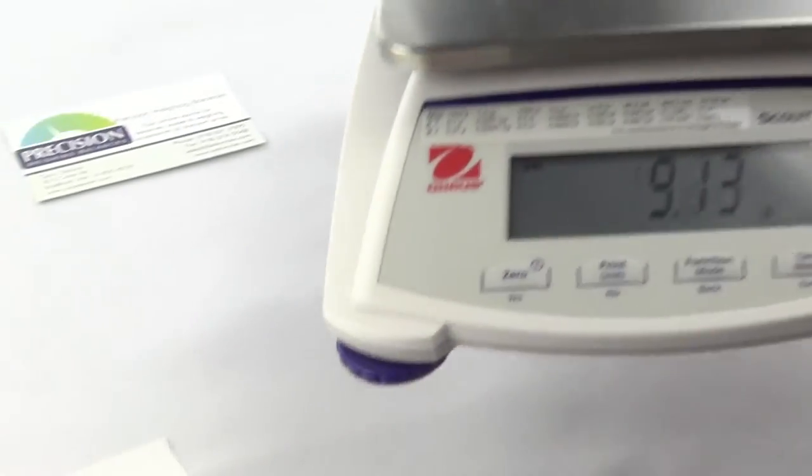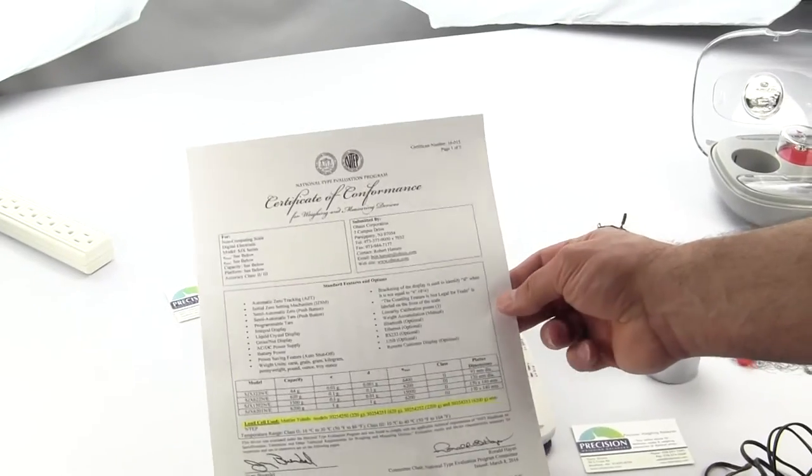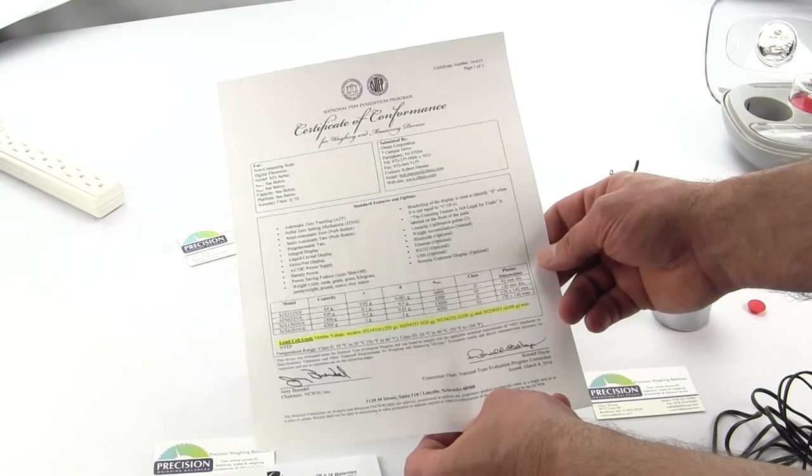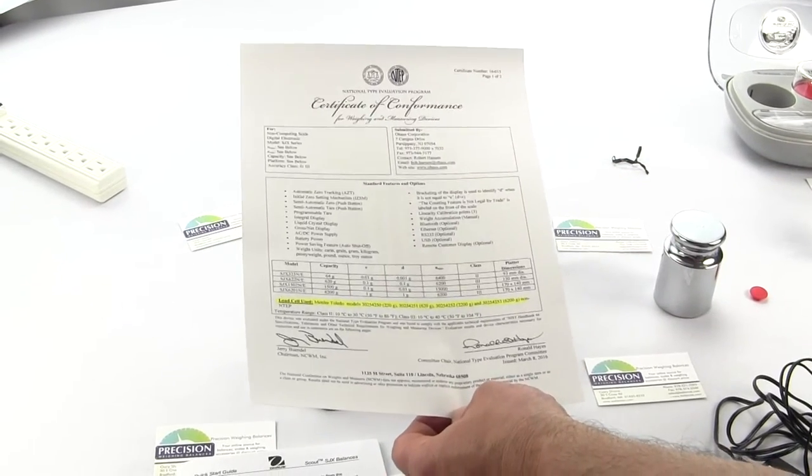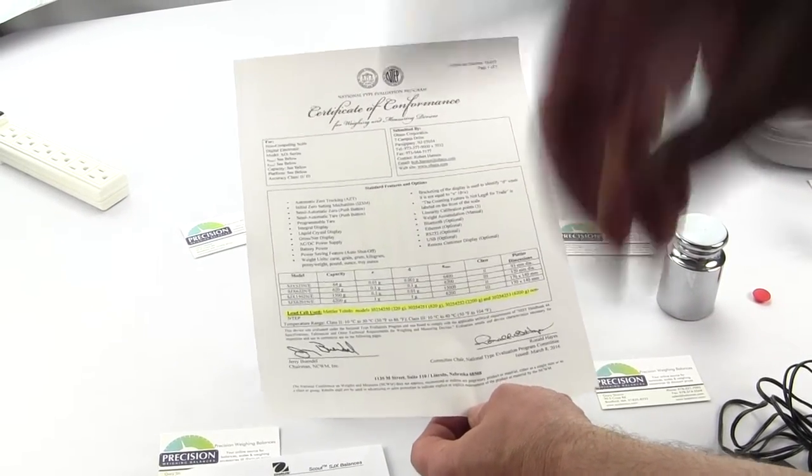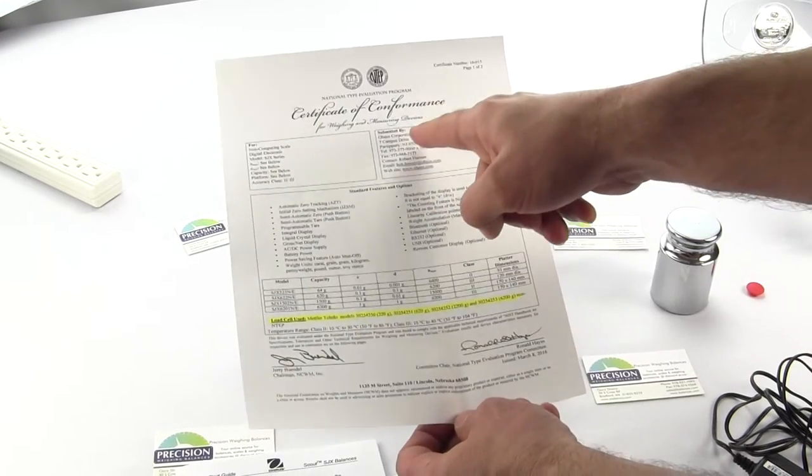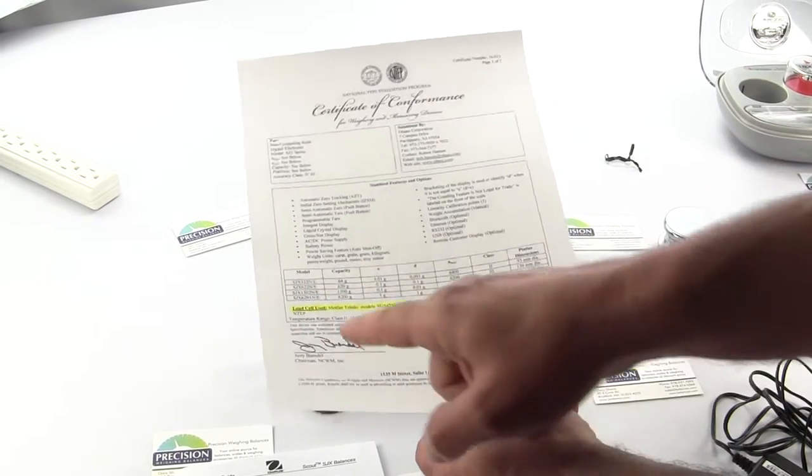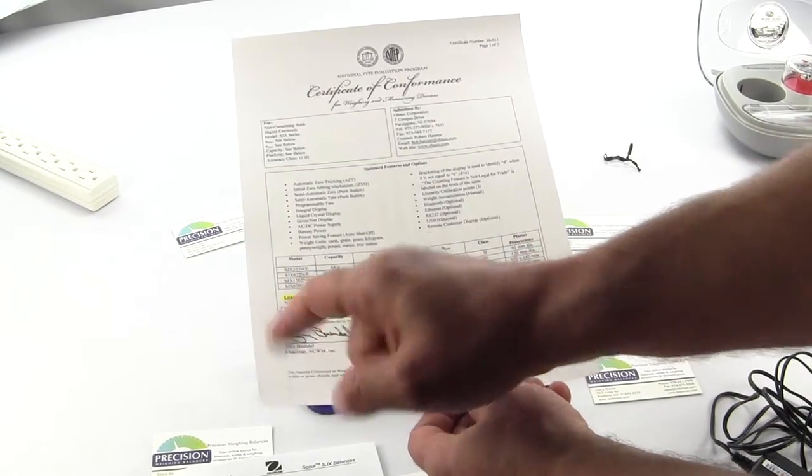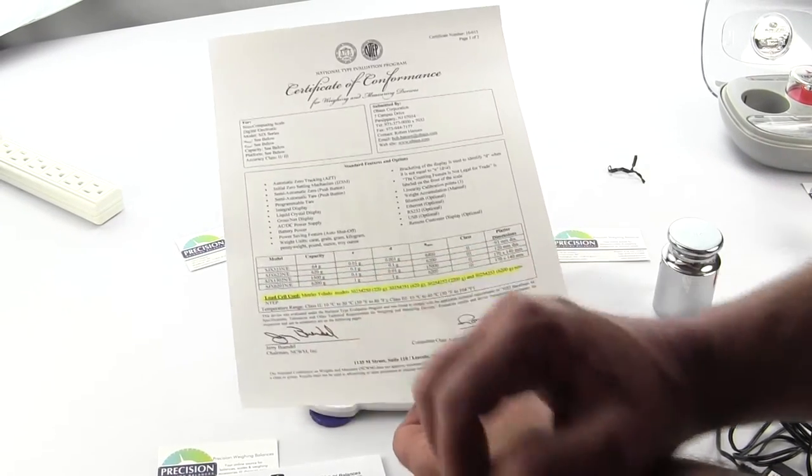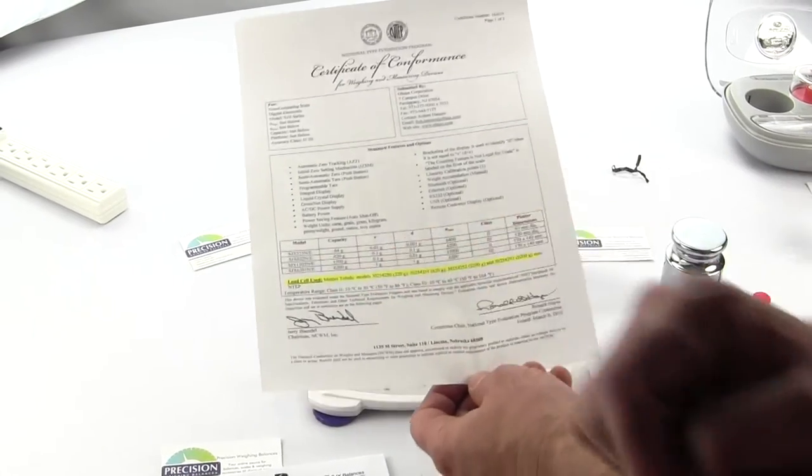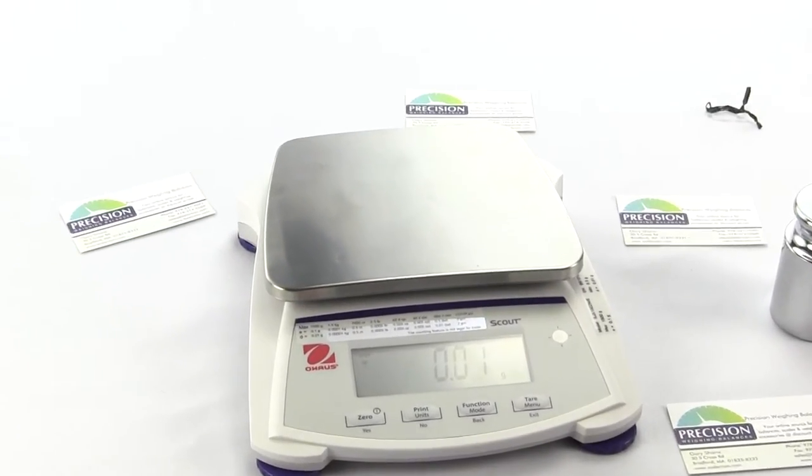What I wanted to show you is you can download this off the internet. It's on our website, there's a link. This is from the National Type Evaluation Program. Ohaus is the manufacturer of the scale and it shows you the models and the readability. You'll notice right here, load cell use - this is using a Mettler Toledo load cell. So it's a high quality scale. It's written right there on the CSC the kind of load cell that they're using.